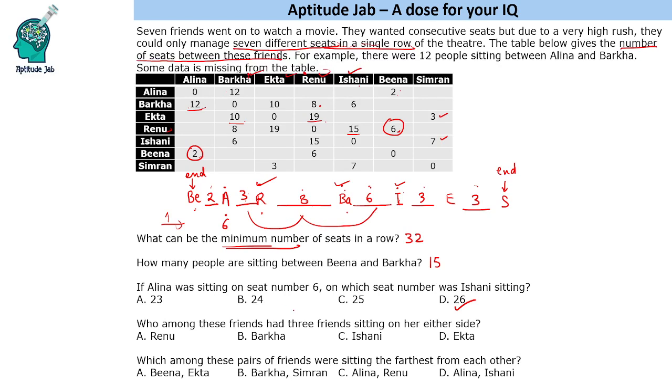Who among these friends had 3 friends sitting on either side of her? The central person in this arrangement is Barkha.